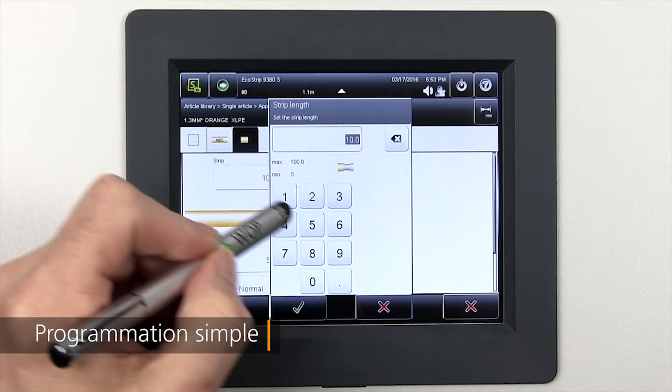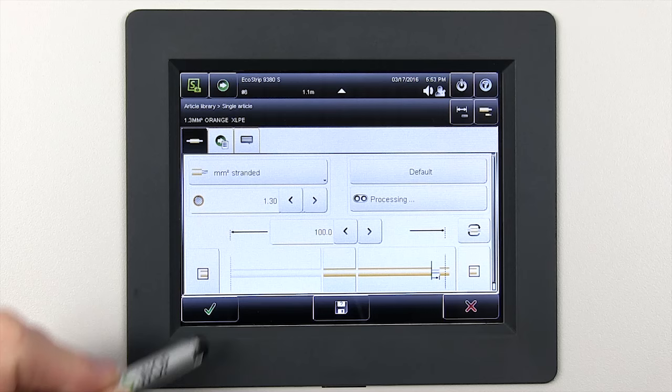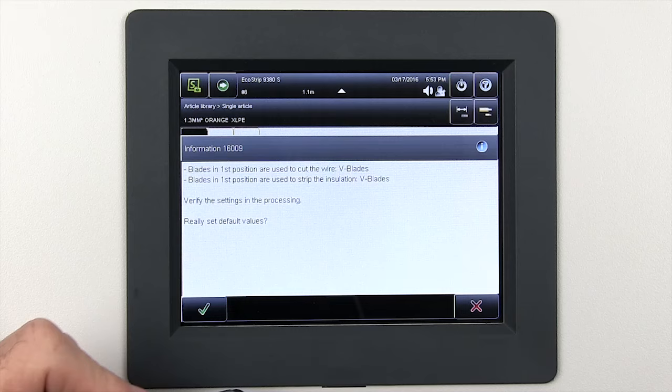L'interface du logiciel S-ON est maintenant la norme sur tous les produits de coupe. Et avec l'écran tactile en couleur intégrée de 5.7 pouces, la programmation compréhensive est maintenant disponible à un prix abordable.